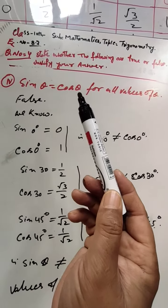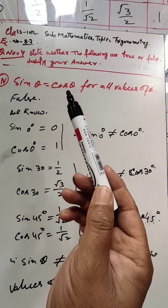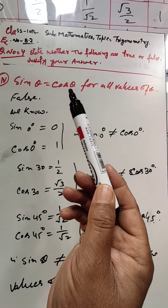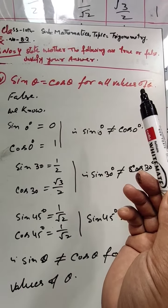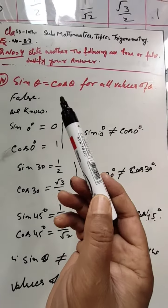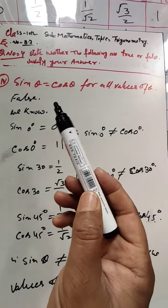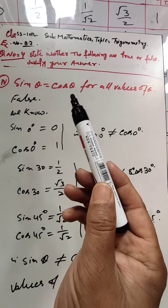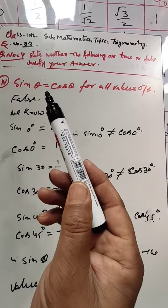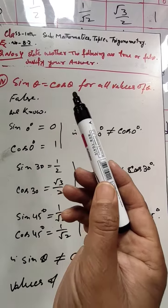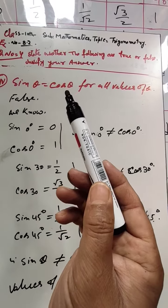The statement is: sine of θ is equal to cos of θ for all values of θ. We have to determine if this is true or false by checking values of θ from 0 to 90 degrees.